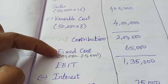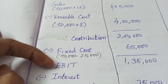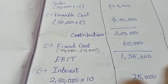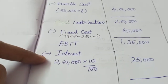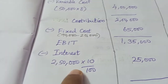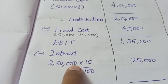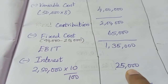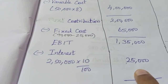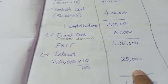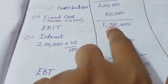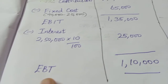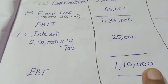To find EBIT: Contribution of 2,00,000 minus Fixed Cost of 65,000 gives EBIT of 1,35,000. Then Interest is 25,000. So EBIT minus Interest gives EBT: 1,35,000 minus 25,000 equals 1,10,000 — this is Earnings Before Tax.